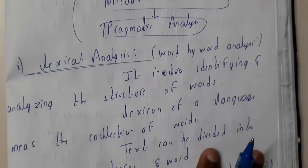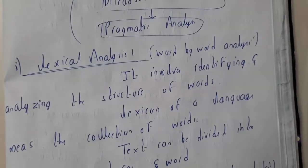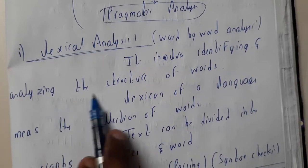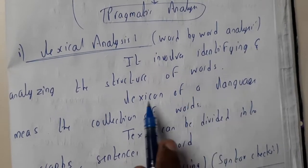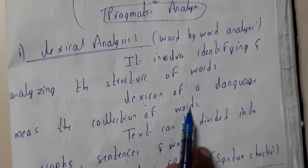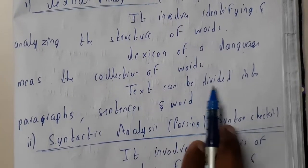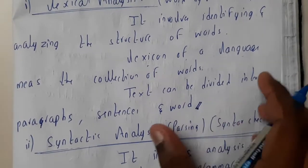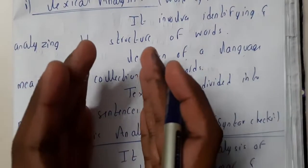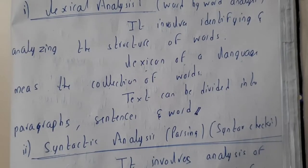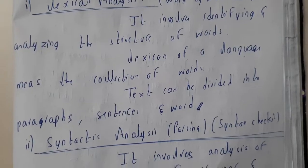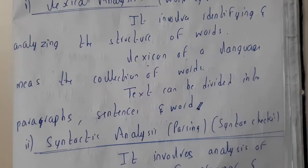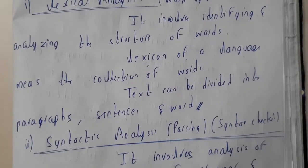Lexical analysis—we can say in simple words, word by word analysis. It involves the identification and analyzing the structure of words, the lexicon of a language, means the collection of words. Text can be divided into paragraphs, sentences, and words. So the whole paragraphs will be divided into sentences and sentences are divided into words in this lexical analysis. If you have some idea about compilers, you will be using a word called tokens, right? So we'll be dividing the whole program into small tokens and we'll be analyzing them. So the same process will be occurring here.